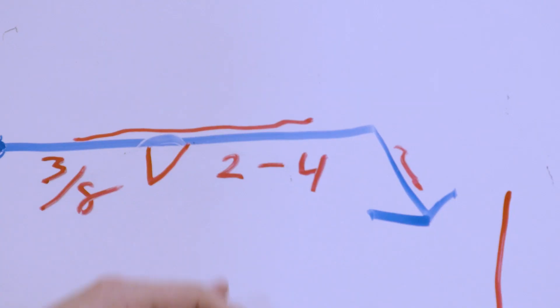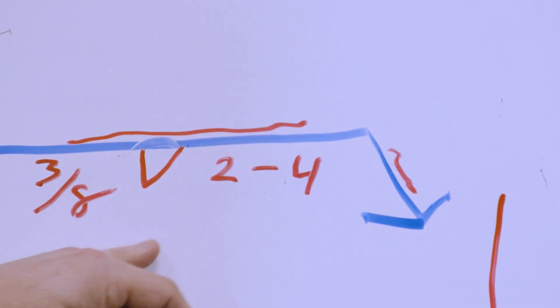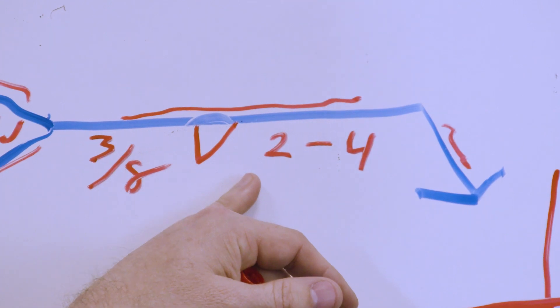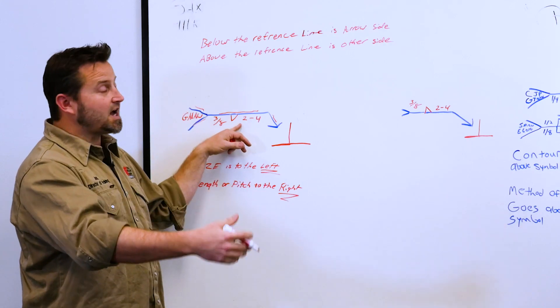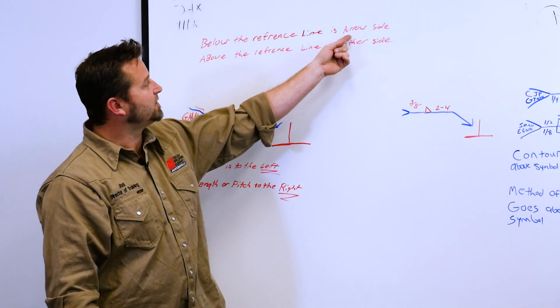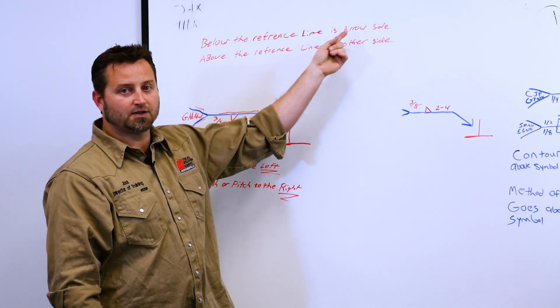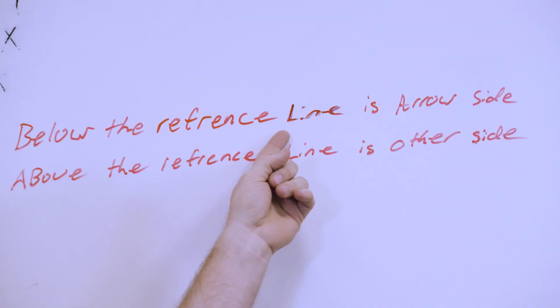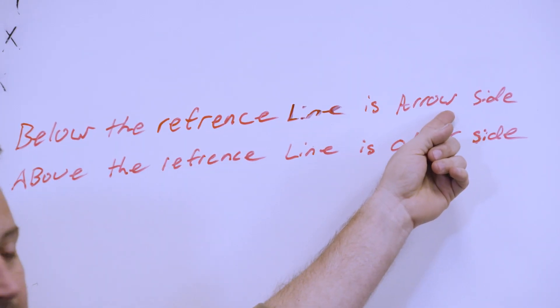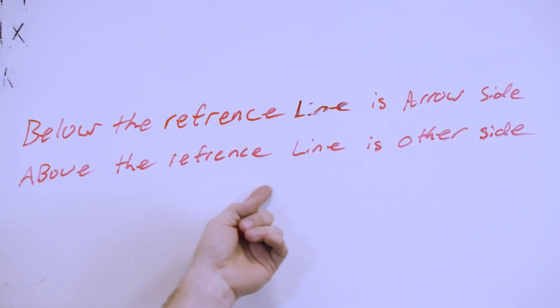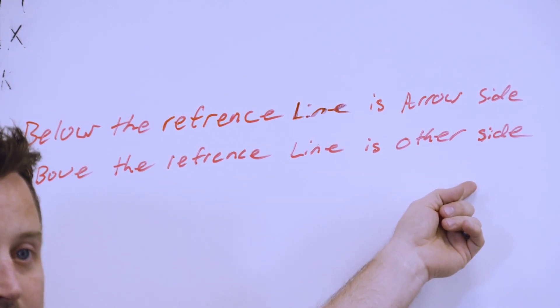So let's talk about this a little bit. If it's below your reference line, this information, if your fillet weld is below the reference line, it means that you're going to put your weld on the actual arrow side. So I wrote it down here, if it's going to be below the reference line, it's going to be on your arrow side. So let's repeat that again. If the symbol is below the reference line, it is going to be on the arrow side. If the symbol is above the reference line, it will be on the other side.